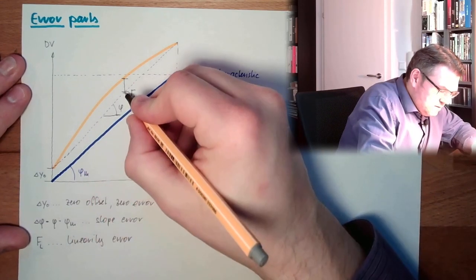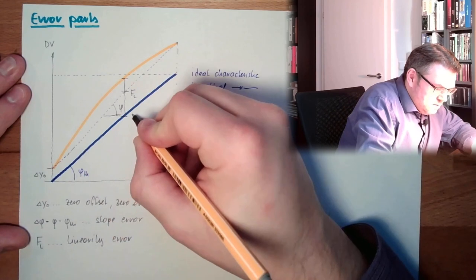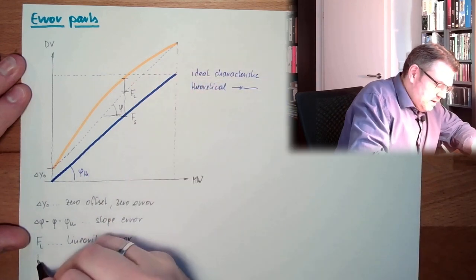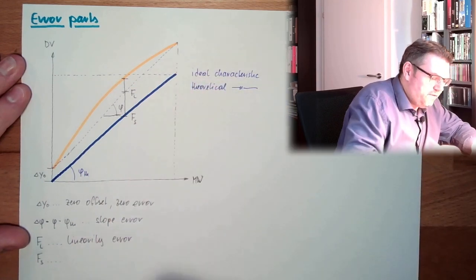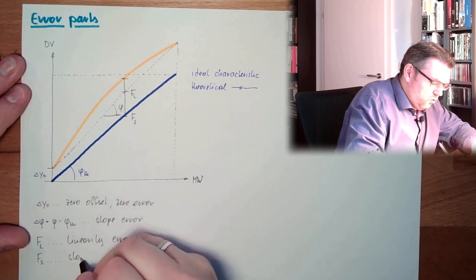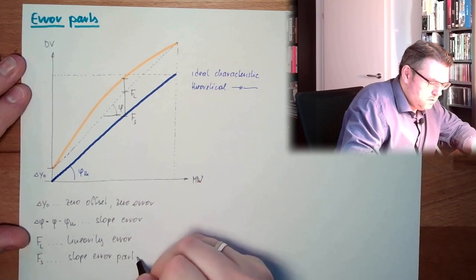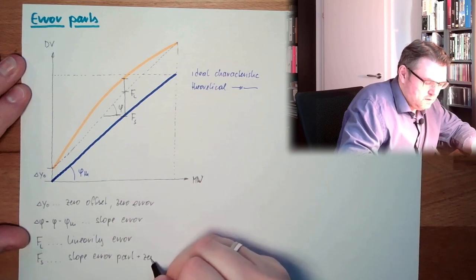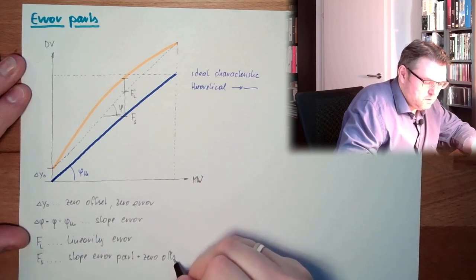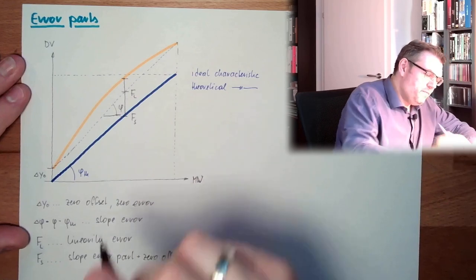And this here, FS. FS consists of two different things. This is one slope error part plus zero offset. This is this part.